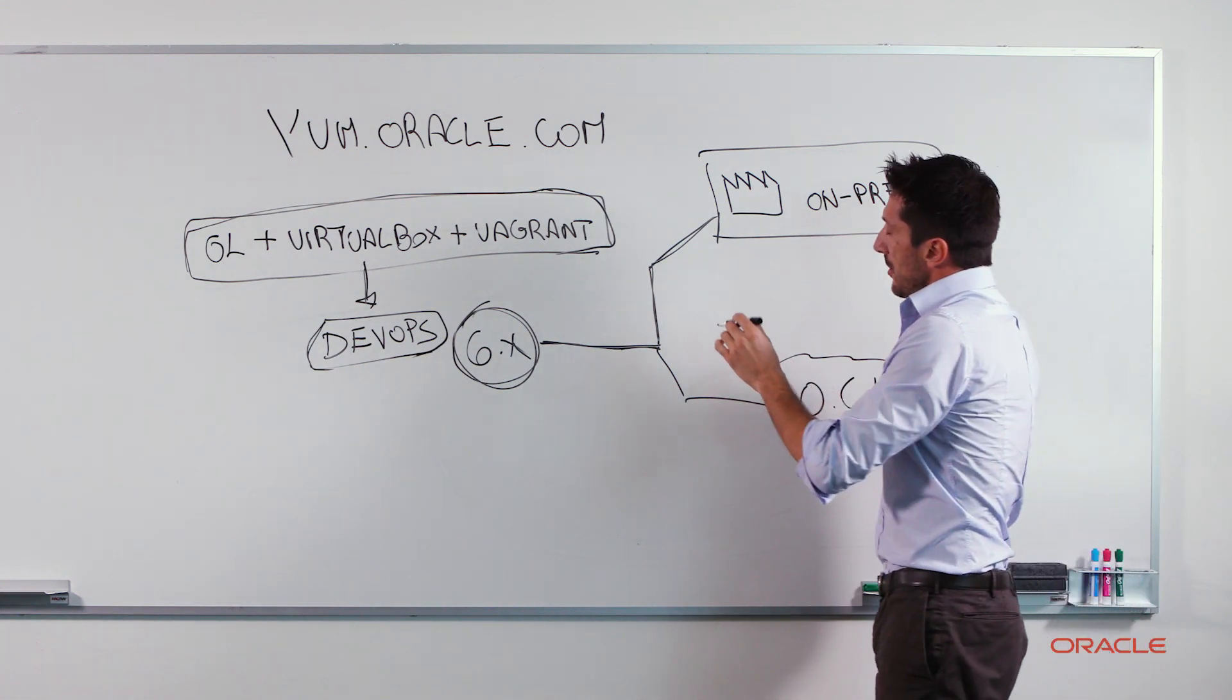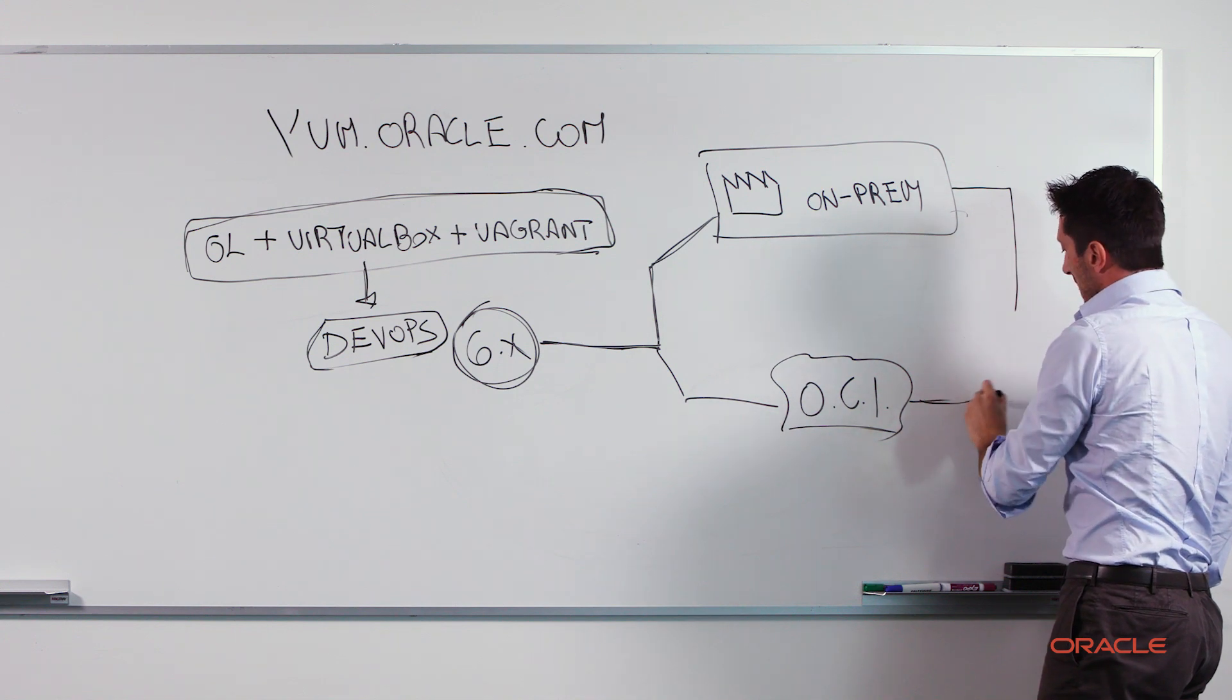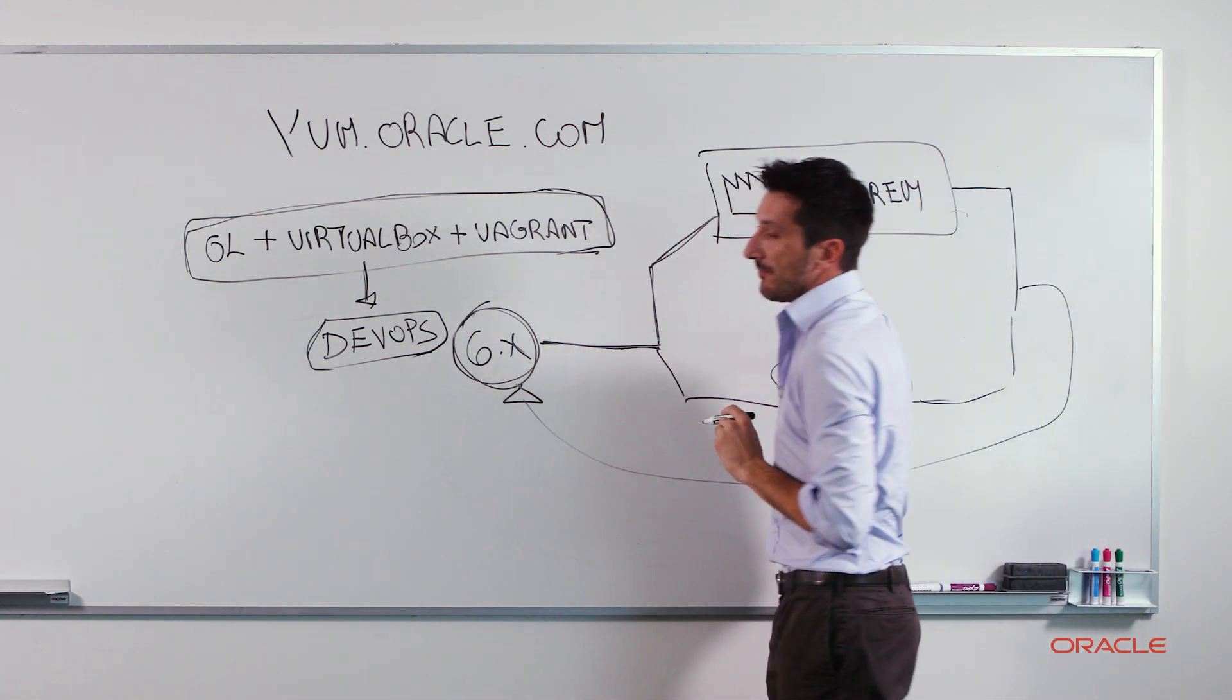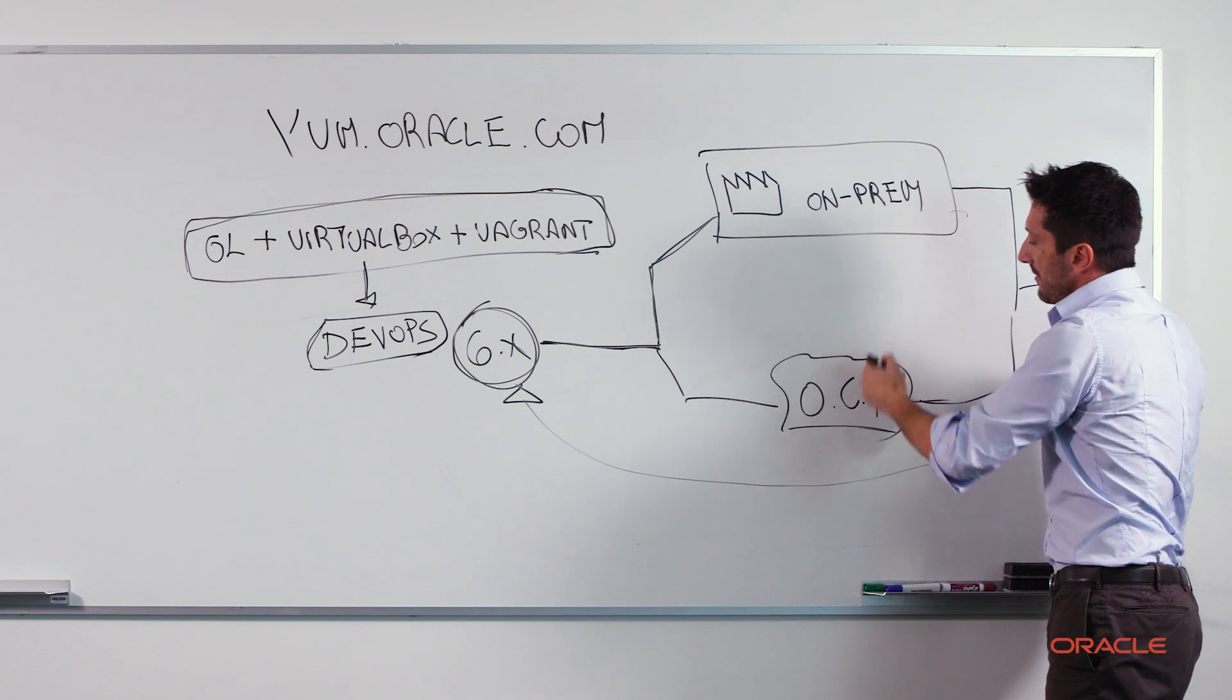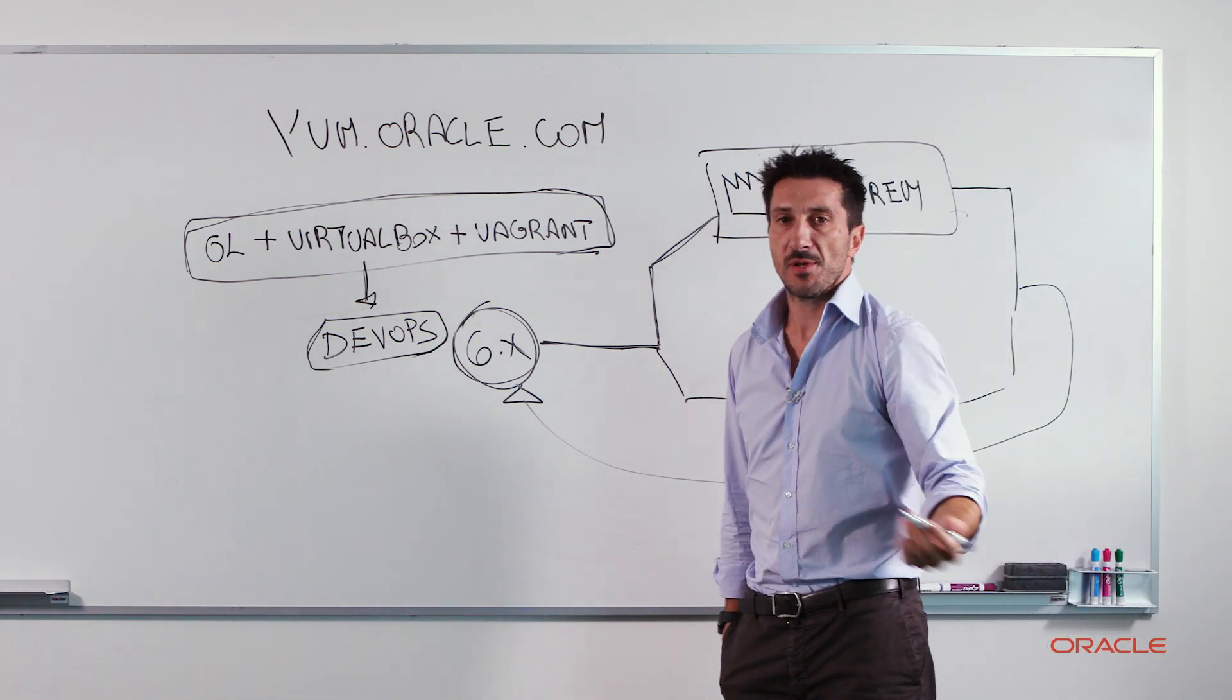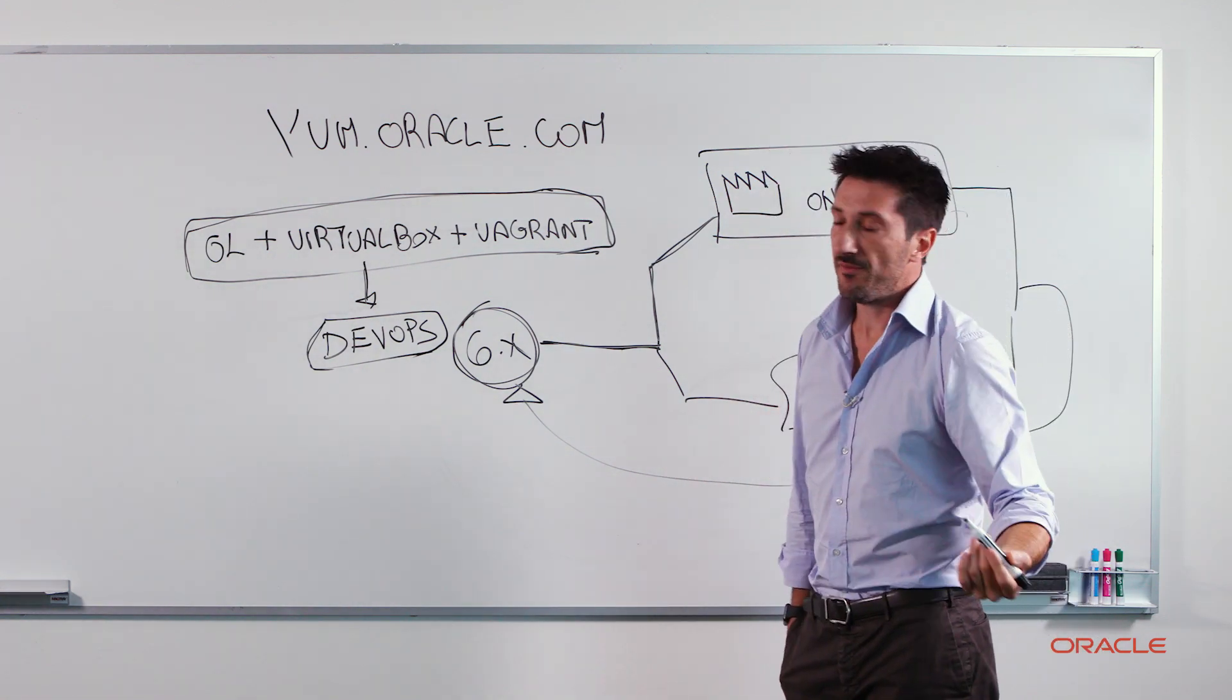And that said, we also worked to the option to get back those kind of environment to your development environment. An example can be, I have an issue on my production environment running on-prem as well as on the Oracle Cloud. I have a technical issue, it can be a performance issue, and I want to test, I want to do things, disruptive things.